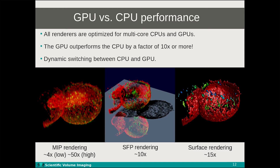All the rendering algorithms have recently been updated and now support GPU acceleration, leading to large performance increases — in most cases about a factor of 10 or more. In the MIP renderer we generally expect about 4 times improvement for low quality renders and about 50 times for high quality renders. In the SFP renderer we expect about a 10 times increase, and in the surface renderer about a 15 times performance increase. By decreasing the render time per frame, the renderer tools become more interactive and animations can be created much faster. Since the CPU code was also updated, Huygens will automatically and dynamically switch between CPU and GPU rendering, using CPU only when the GPU is unavailable or has insufficient memory.